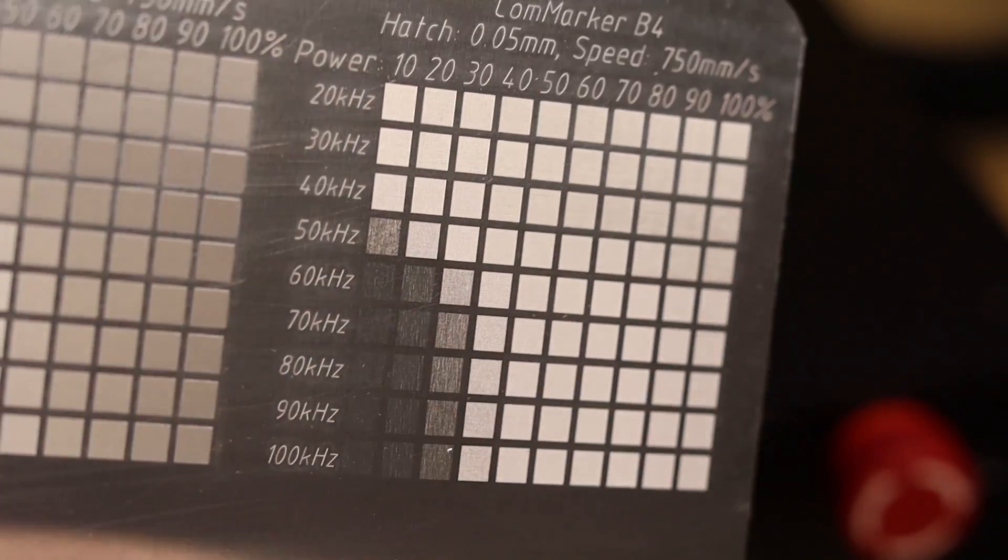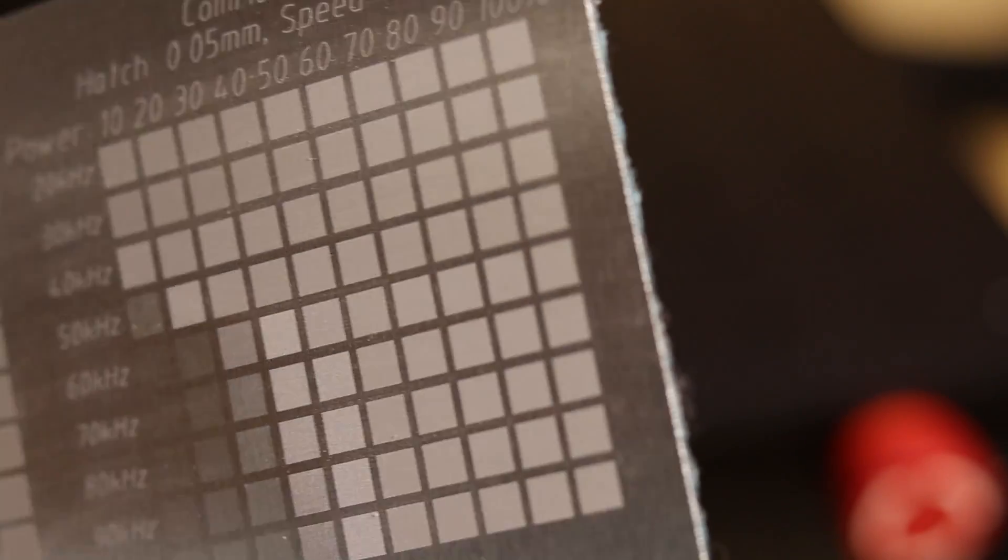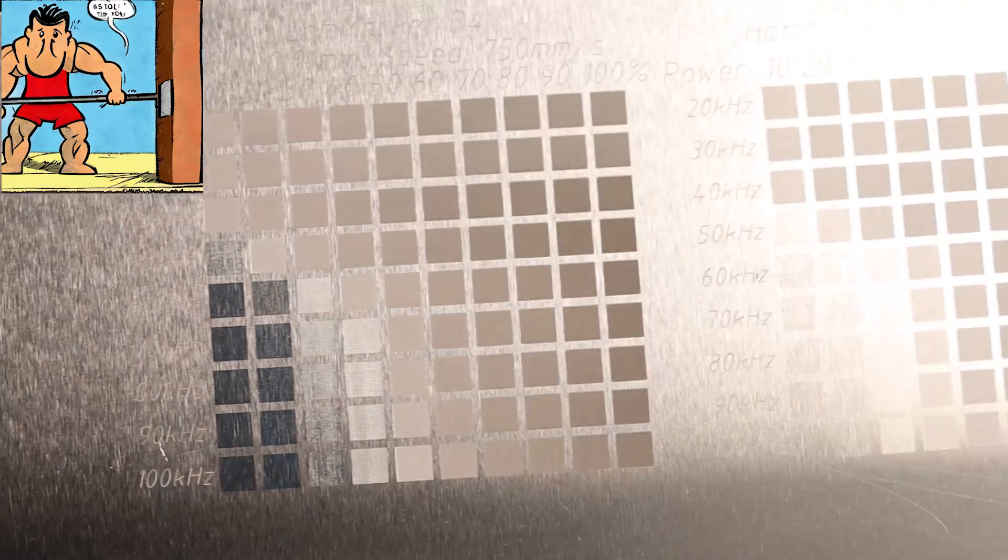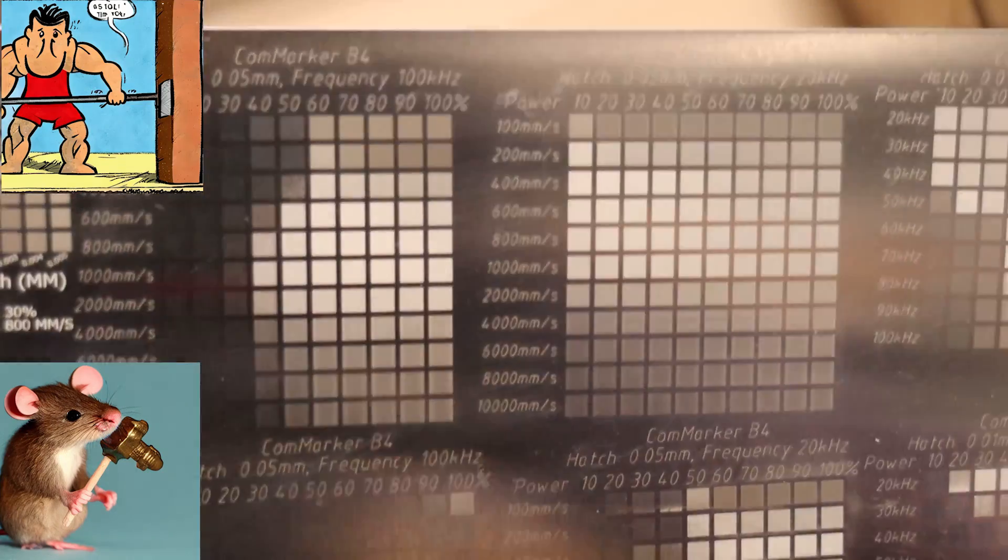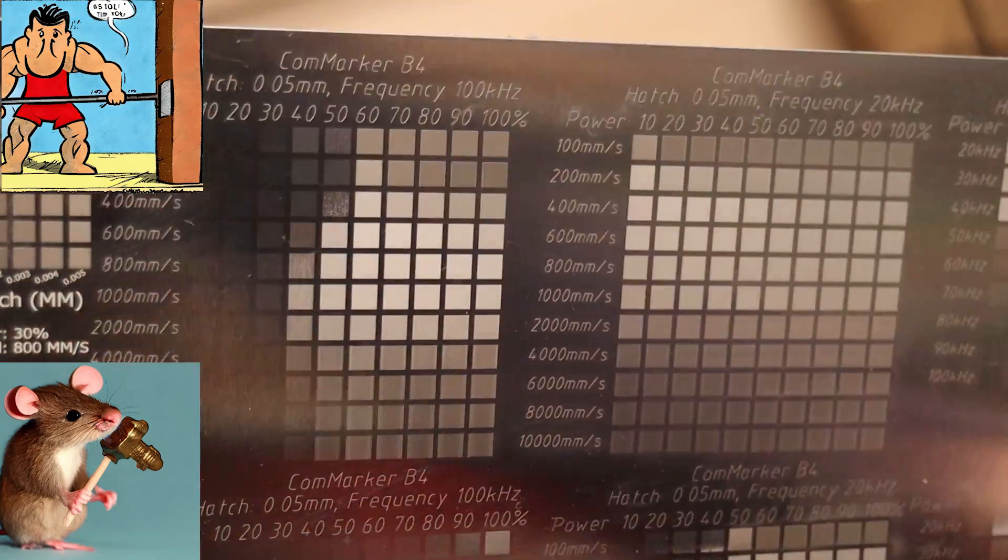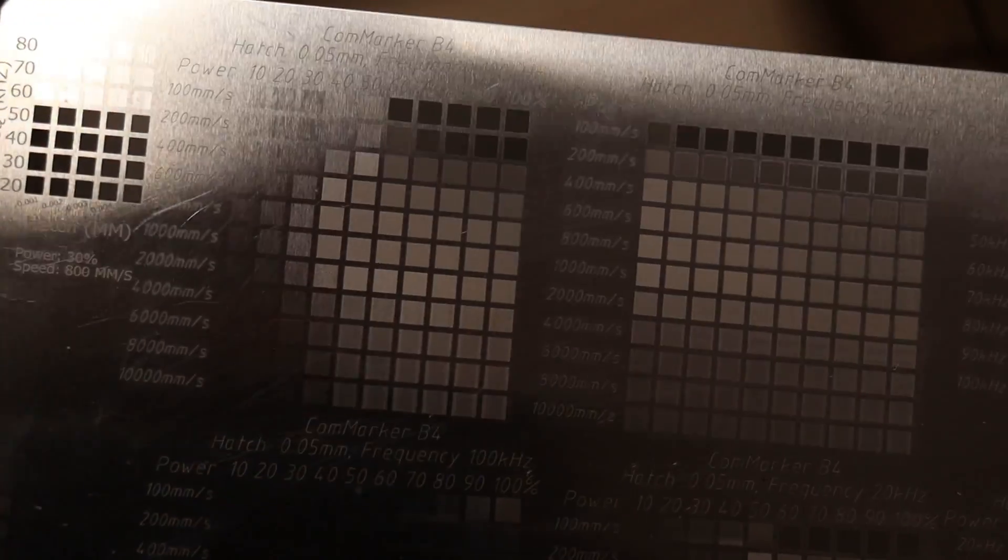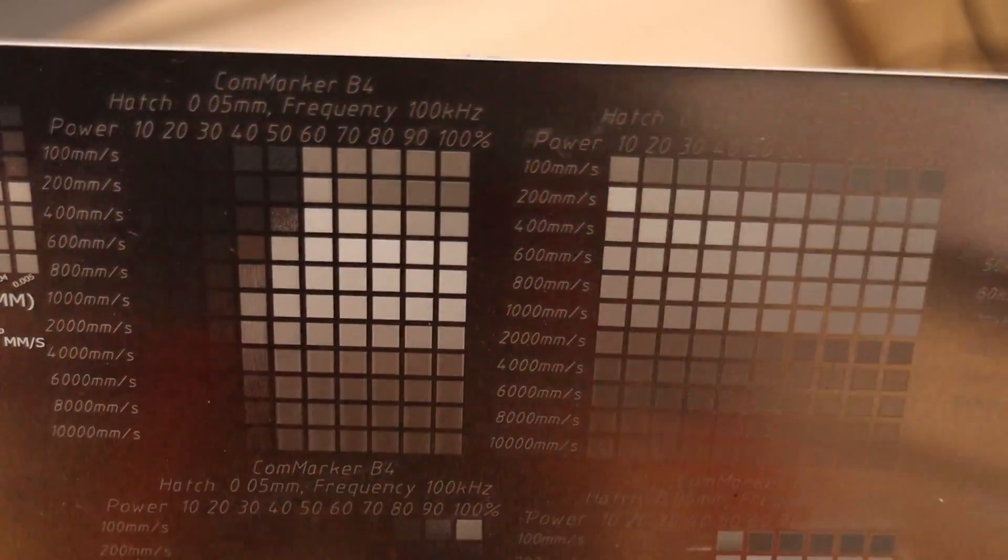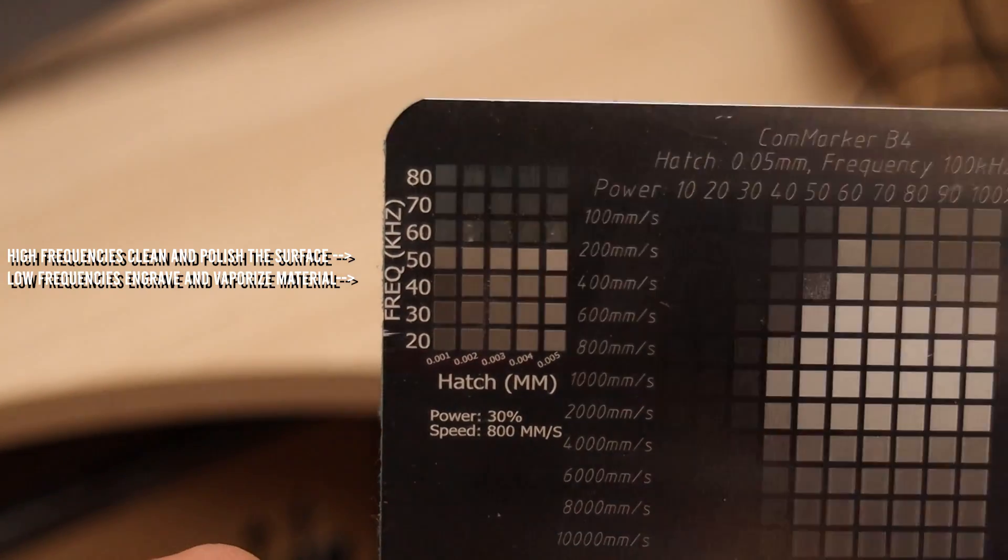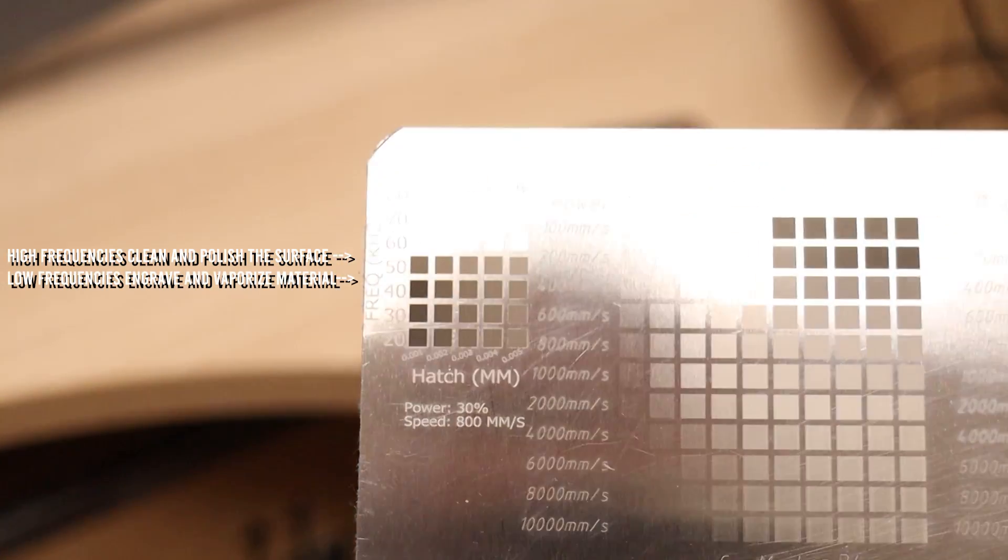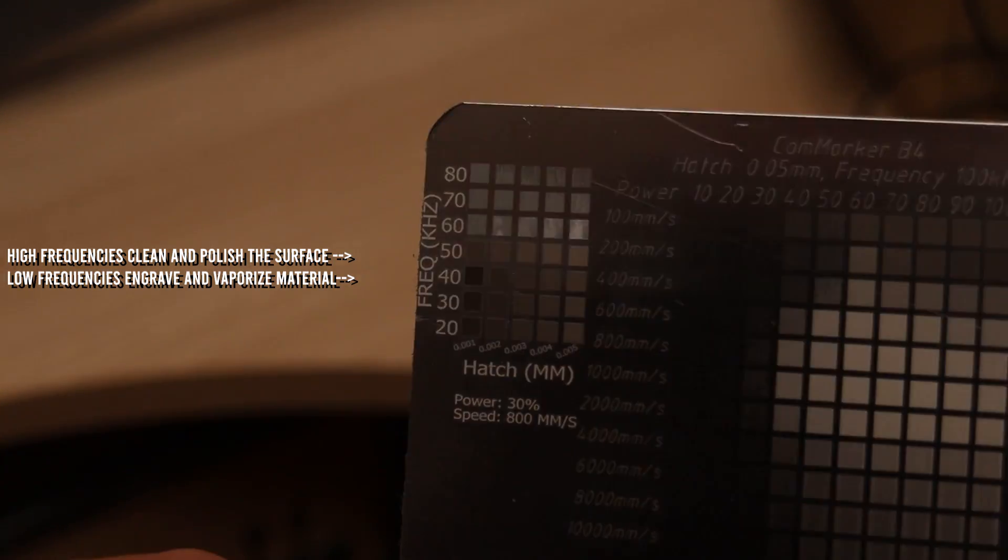By adjusting the frequency, you can set the intensity of these pulses. You can imagine these pulses like hitting the surface with a hammer. Low frequency can be represented with a large hammer and a high frequency is a small hammer. With a small hammer you can produce a lot of very small hits, while with a large hammer, you can only produce a few powerful hits at the same time. This causes the laser beam to produce a different effect at different frequency at the same power setting. We can see that the lower frequencies are used to remove a lot of material and produce deep engravings while the high frequencies are used more for cleanup and polishing.